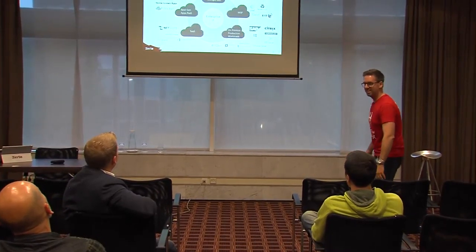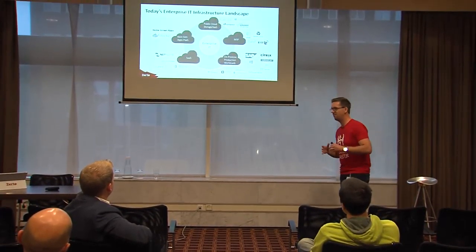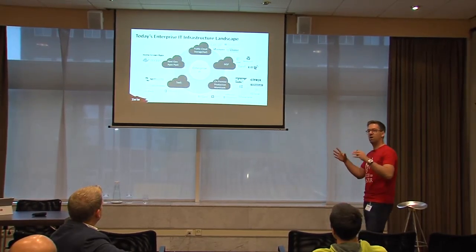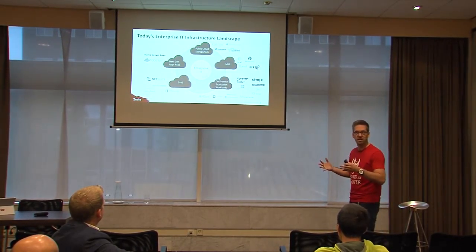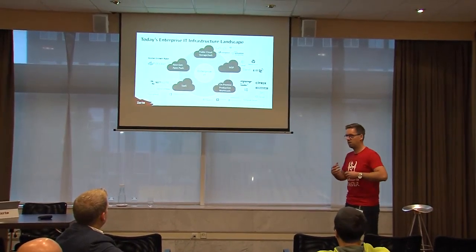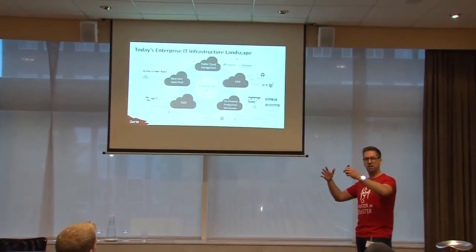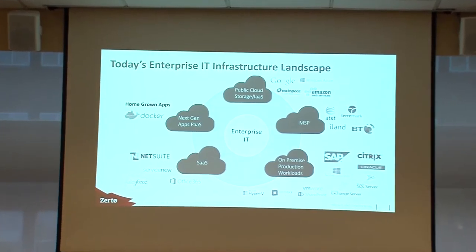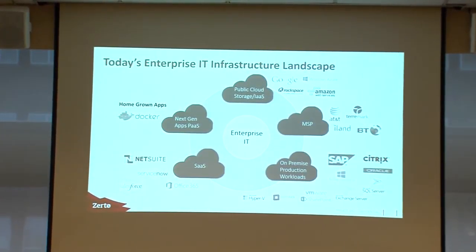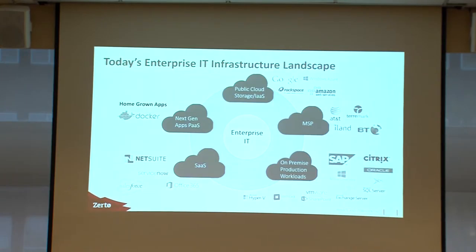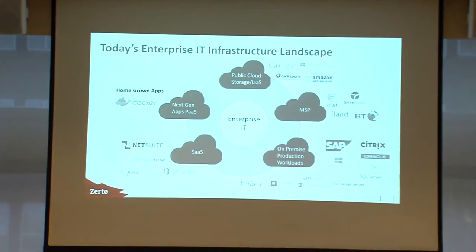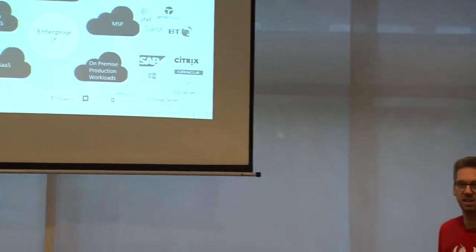What does the IT landscape look like right now? We have on-premise workloads — VMware, Hyper-V — running all kinds of applications: SAP, Exchange Server, you name it. Besides that, a lot of companies outsource some of their infrastructure or applications to managed service providers. The next step is public cloud — many companies are looking at AWS or Azure to put certain workloads there. And there's the next generation like Docker being looked at right now.